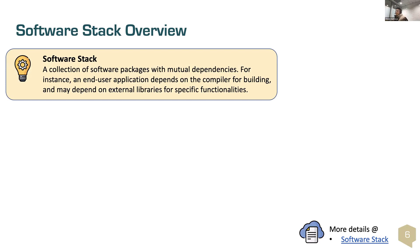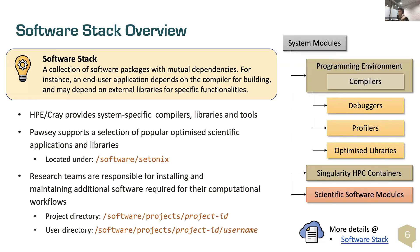We call the software stack all the software that we have already installed in POSI. We don't install everything for every user. As some software is used by many users, it becomes very common, and that's the software we decide to install. There is some other software that is installed only project by project or even user by user, and usually it is the user that does those installations.